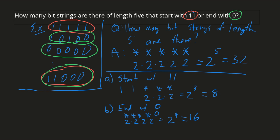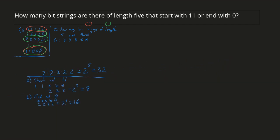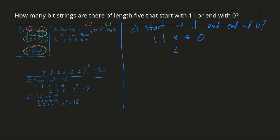What about how many do both? Part C is: how many bit strings start with 1,1 and end with 0? A bit string of length 5 that starts with 1,1 and ends with 0 would be of the form 1,1,*,*,0. So there are 2 times 2, which is 2 squared, which is 4.